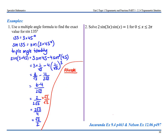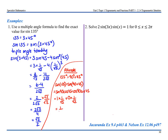I wouldn't use multiple angle formulas unless specifically asked. The alternative is to use the formula sheet knowing that 135° = 90° + 45°. So sin(135°) = sin(90° + 45°) = sin(90°)cos(45°) + cos(90°)sin(45°) = 1 × 1/√2 + 0 × 1/√2 = 1/√2 = √2/2, giving the same answer.